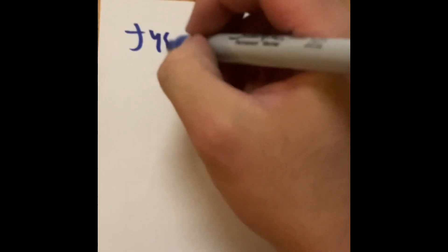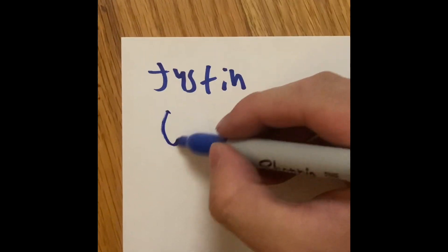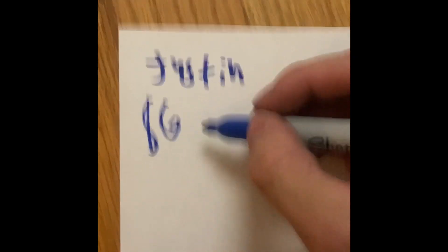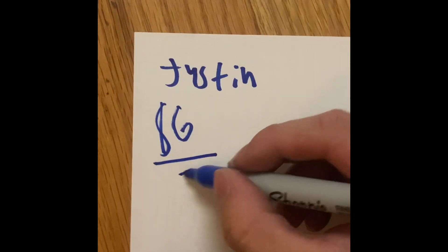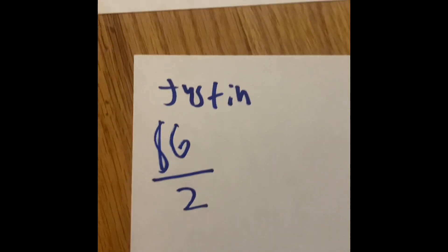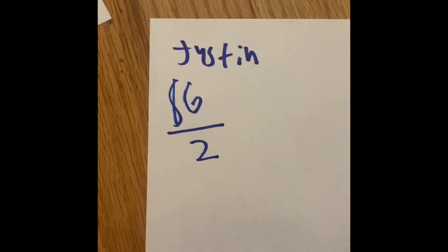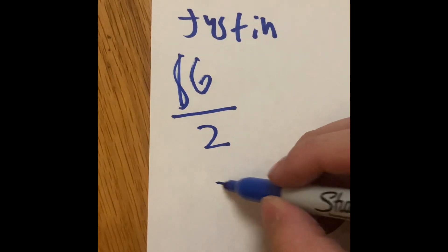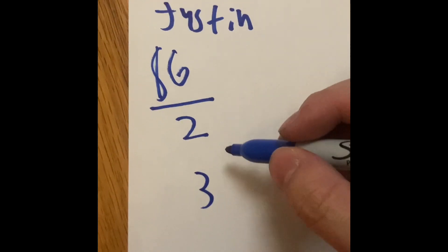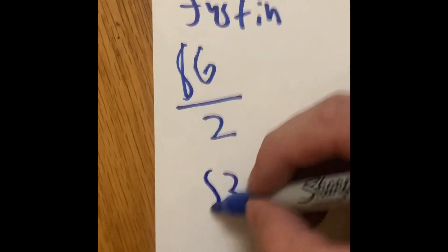So, we know for Justin, he was the first to come. His total ice cream cost was $6, right? But he had two toppings on it, so we're going to divide by two. The toppings are going to cost some kind of money, but we don't know what kind of money. So, six divided by two is three. So, an ice cream without the toppings would be $3.